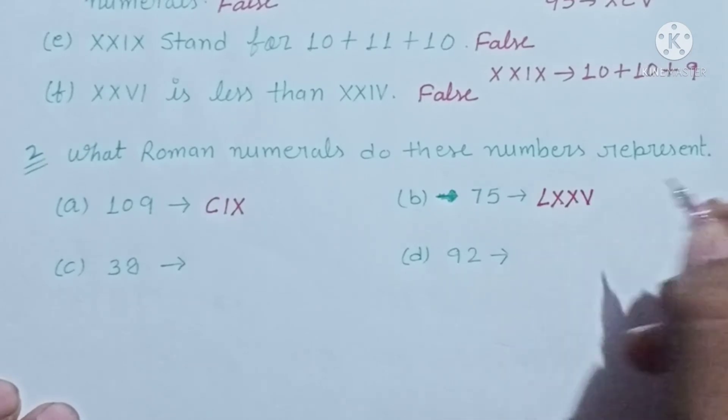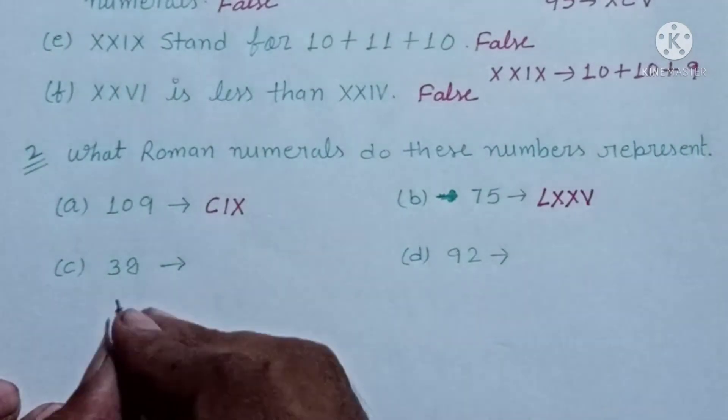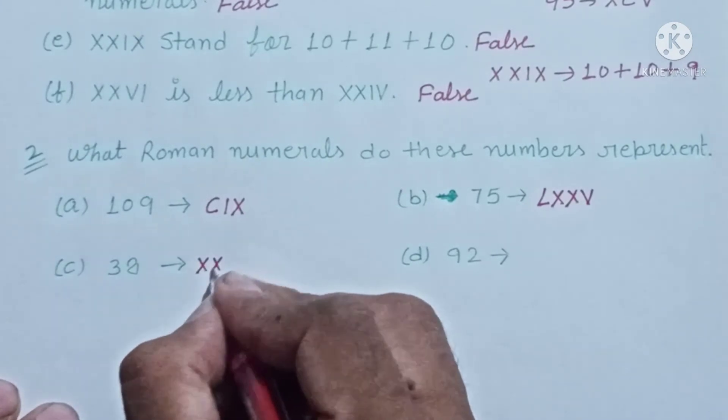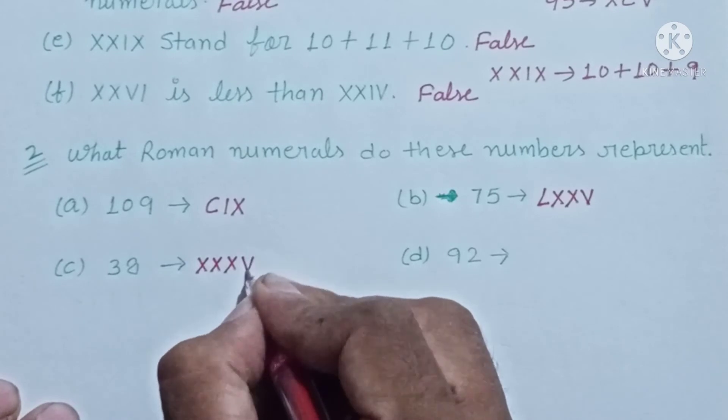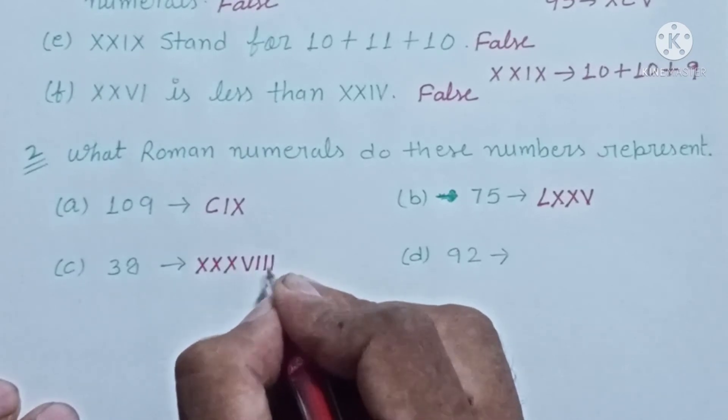Similarly, 38: 10, 10, 10 is 30, plus 8. We write 8 as VIII, so 38 is XXXVIII.